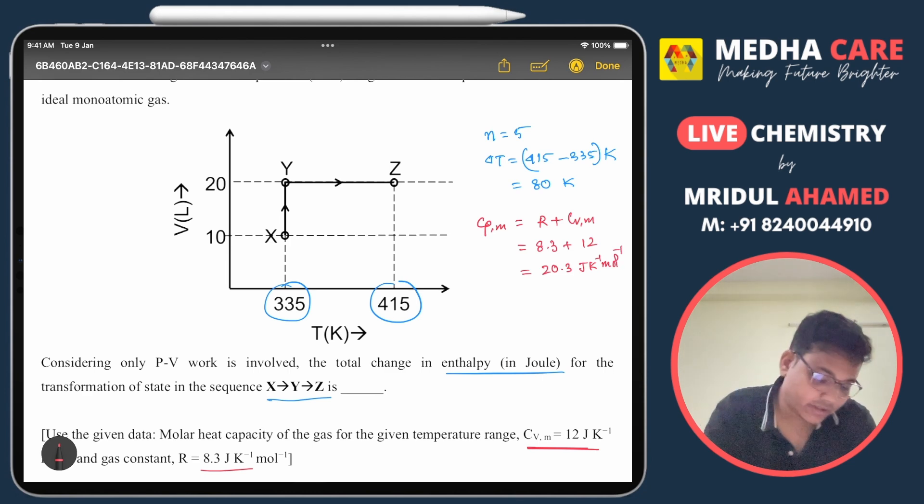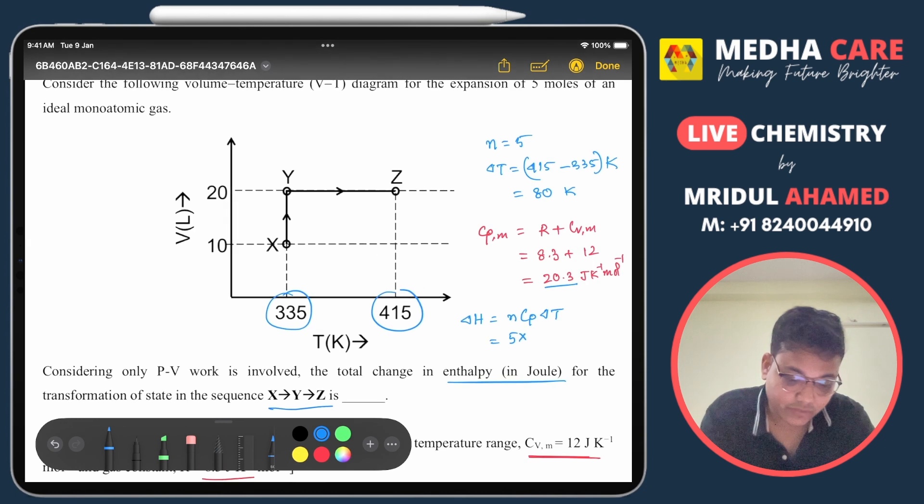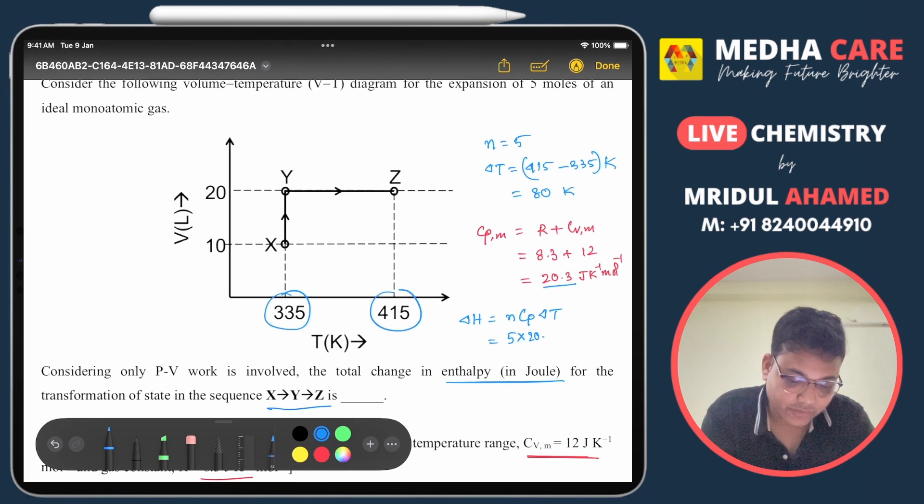And directly I will calculate now for the answer. I will calculate delta H. Delta H is n·CP·ΔT - that formula I think everybody knows. So delta H is n·CP·ΔT. N given 5, CP given 20.3, so 20.3, and delta T is 80. So that is 400 into 20.3, it is coming...